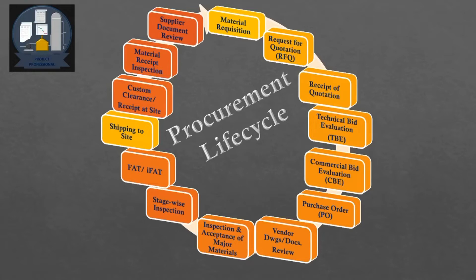In cases where different components are manufactured at different locations, all components are assembled and a combined test is performed, called the Integrated Factory Acceptance Test, or IFAT. Once the FAT or IFAT is complete as required, the material is shipped to the destination. Upon arrival, it goes through customs clearance and is then received at the site, where a material receipt inspection is conducted. Post inspection, the final documentation from the vendor or supplier is reviewed, completing the procurement lifecycle.